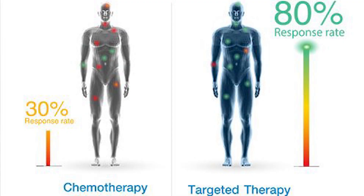Comparing targeted treatment with chemotherapy: with normal chemotherapy, the response rate is only 20 to 30% for most cancers. With targeted treatment, the response rate will be 70 to 80% for the majority of patients.